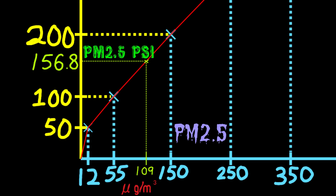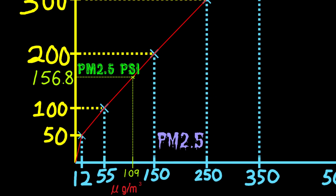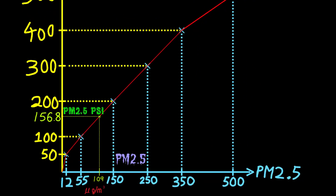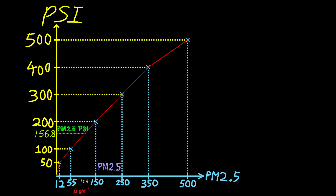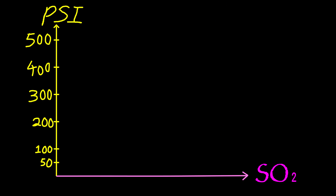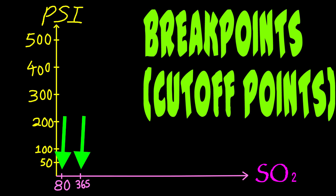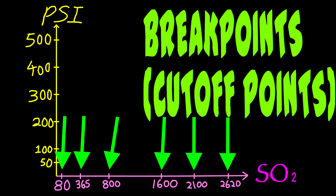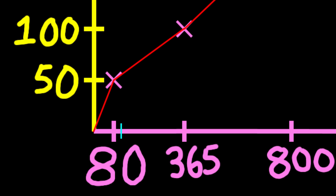For each of the other 5 pollutants, the PSI conversion is done using exactly the same method, except that the 6 cut-off points for that pollutant are different. For example, for sulfur dioxide, the cut-off points are 80, 365, 800, 1600, 2100, and 2620. Again, all we need to do is match up the pollutant cut-off points with the PSI cut-off points and then connect the dots. So in this case, if the sulfur dioxide measurement is precisely 109 micrograms per cubic meter, then the sulfur dioxide PSI is 79.5.